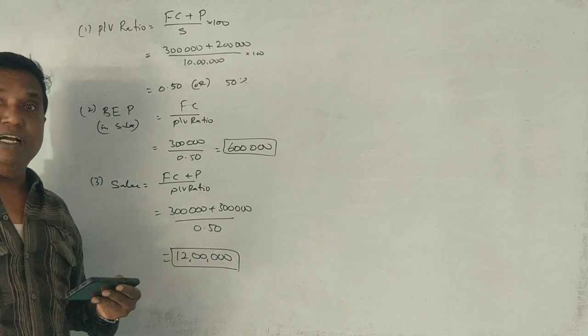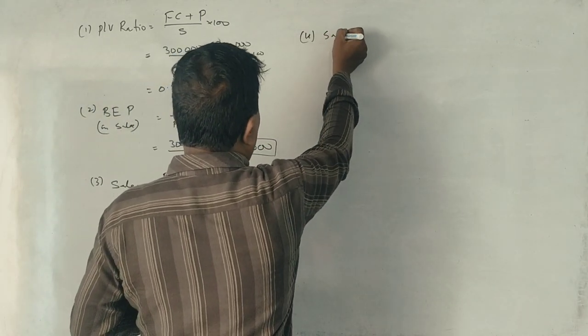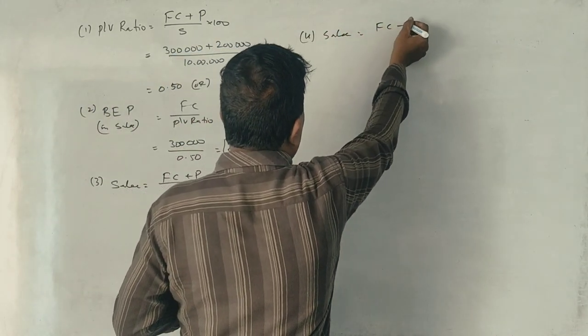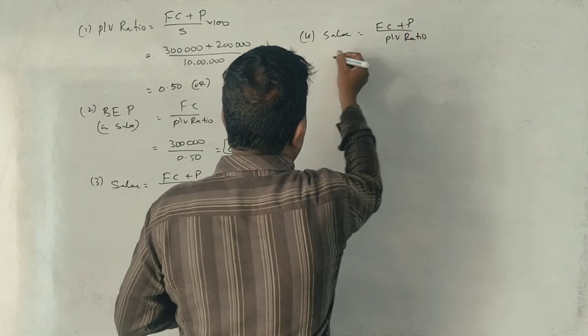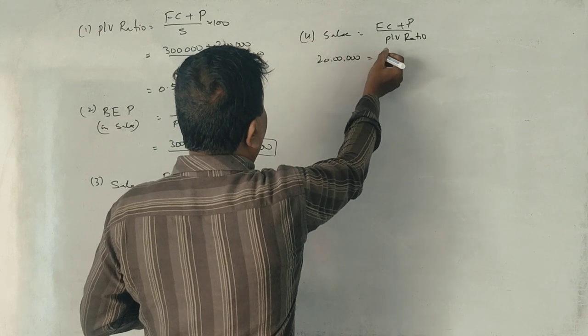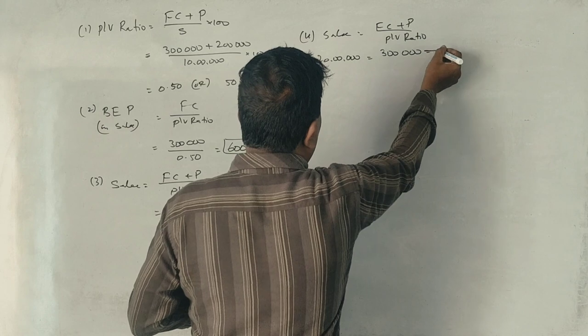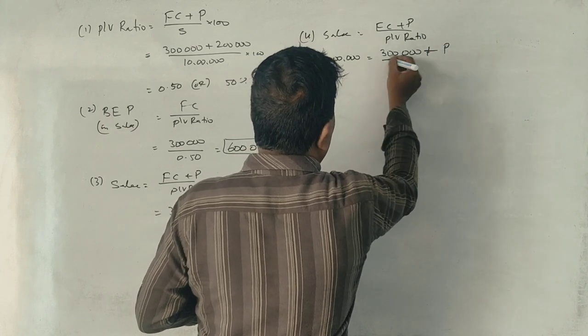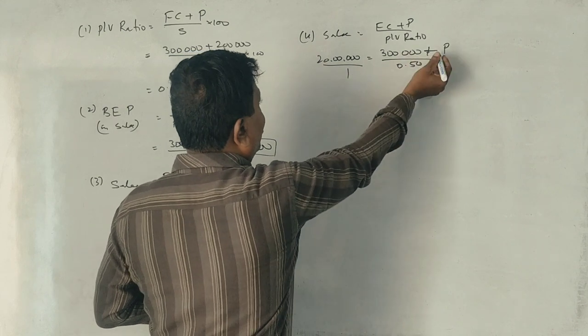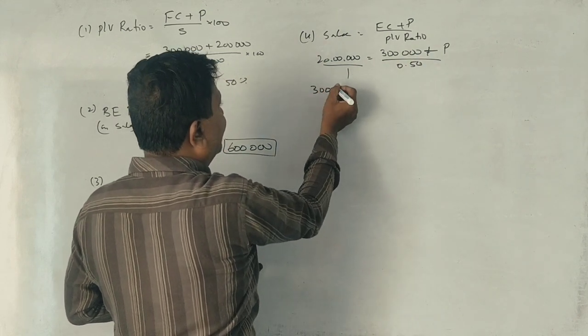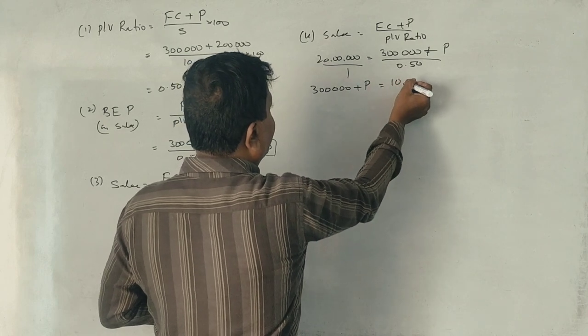When sales is 20 lakhs, sales 20 lakhs and the profit is true. That is the same answer, but formula: fixed cost plus profit divided by P/V ratio. Sales is 20 lakhs. Fixed cost is 3 lakhs. Profit we don't know.